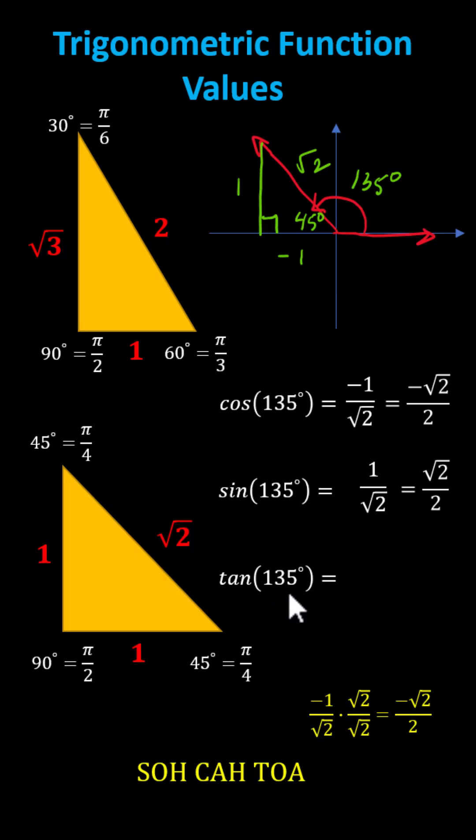Tangent 135 degrees equals the ratio of the opposite side to the adjacent side, which is one divided by negative one, which simplifies to negative one. I hope you found this helpful.